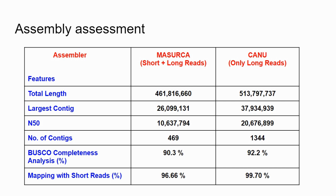For assembly assessment, we look at three major things. First is the N50 value, which gives us an idea about the contiguity of the assembly — a higher N50 means a more contiguous assembly. Second is the BUSCO completeness analysis, which checks for core genes in our assembly; a BUSCO score above 90% is considered good. Third is mapping with short reads, where Illumina reads are remapped to our assembly to check how much data is covered.